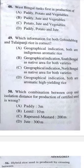Question 50: Which combination between crops and isolation distance for production of certified seed is wrong? Answer D — jute.